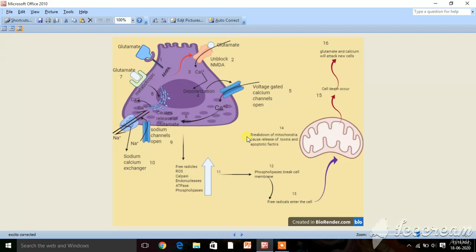Coming to the process, let's do it step by step. I have given numbers as you can see, 1 through 16, which indicate each and every step in chronological order.